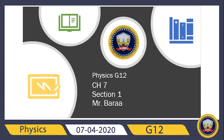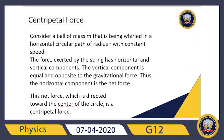Hello again, how are you guys? Today we are still in chapter 7, first section. Chapter 7 is about circular motion. Previously we said that in circular motion we have acceleration — we have two types of acceleration, including acceleration due to changing direction even if the circular motion is at constant speed. Today we move on to centripetal force.